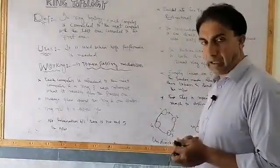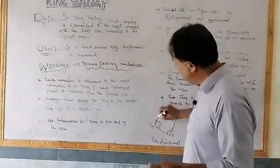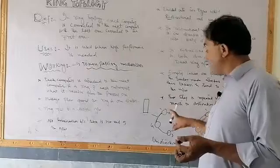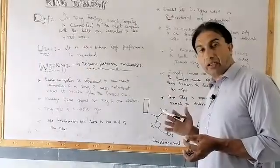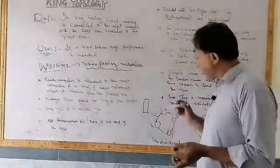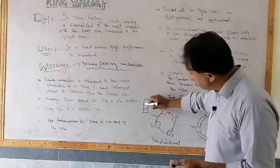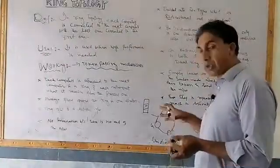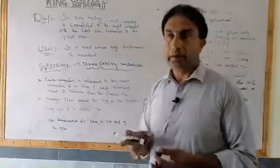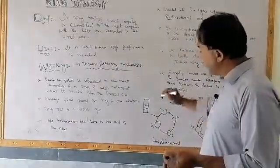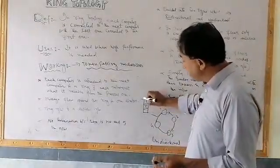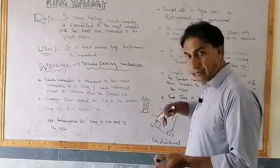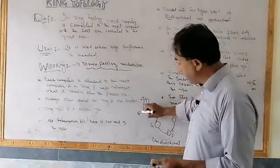Let's suppose this is a network. A free token circulates on this network. When a device wants to send its data to a destination node, it first captures that token. After capturing the token, it attaches its own data to the token along with the sender ID and the receiver ID.